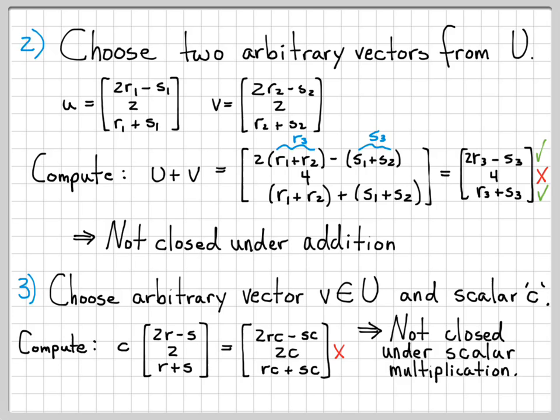That concludes the problem. We were working with a set of vectors that is obviously a subset of R³, and we were determining if it was actually a subspace. There were three properties to check, and if any one fails, the set is not a subspace. For this particular example, all three properties failed, so the set U is definitively not a subspace of R³.